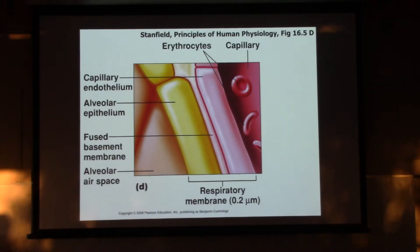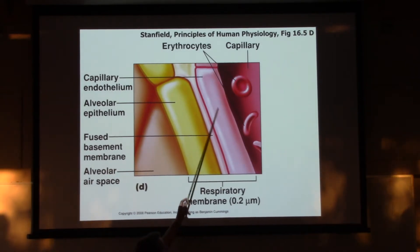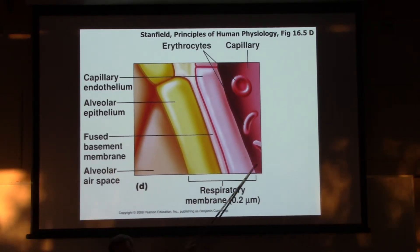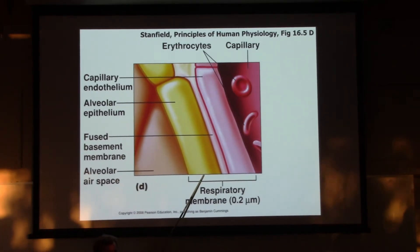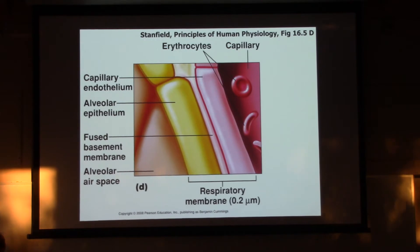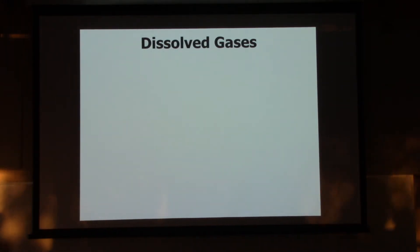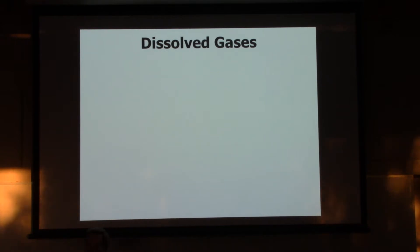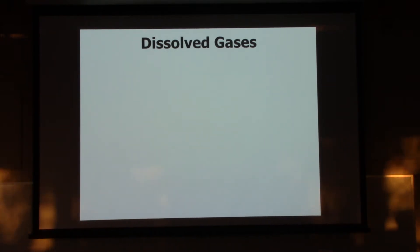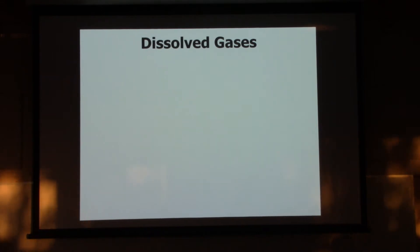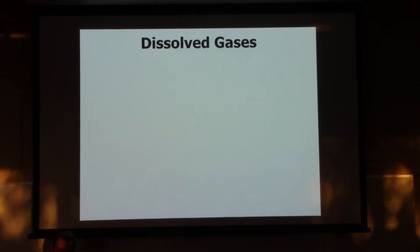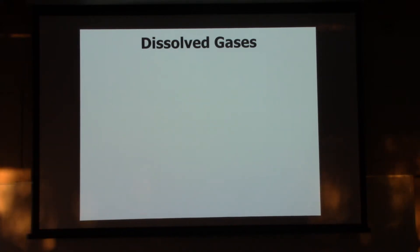Let's look at that respiratory membrane again. On the right, we've got the single layer of cells making up the pulmonary capillary - you can see the red blood cells in there - and the single layer of skinny cells making up the wall of the alveoli. Before we take a deeper look into gas exchange, we need to talk about gases dissolved in a liquid. For oxygen to make it into our body, it first has to dissolve in water in our lungs before it can cross that respiratory membrane.